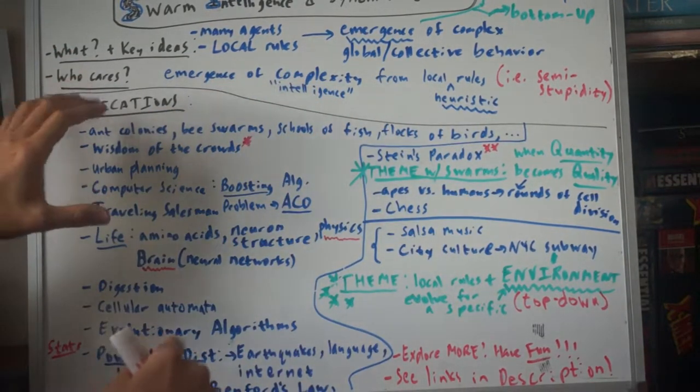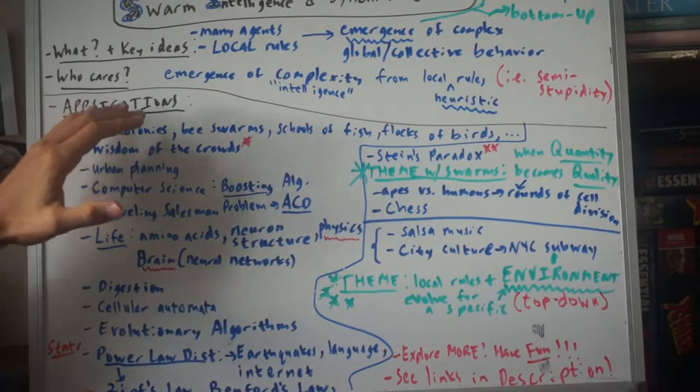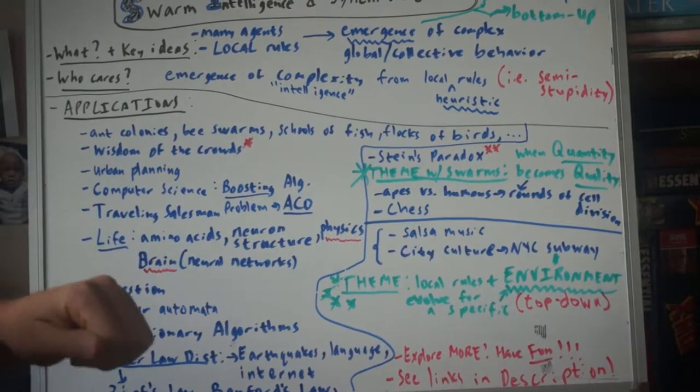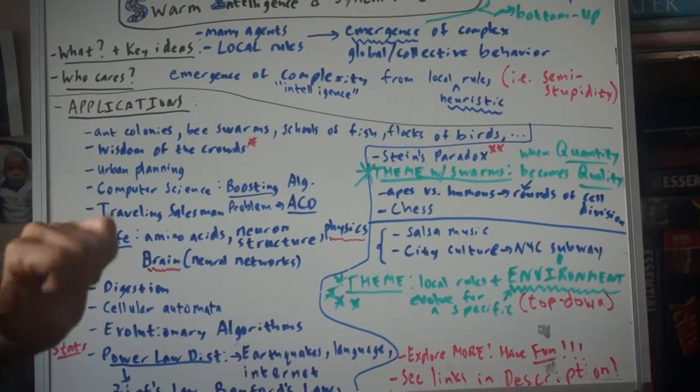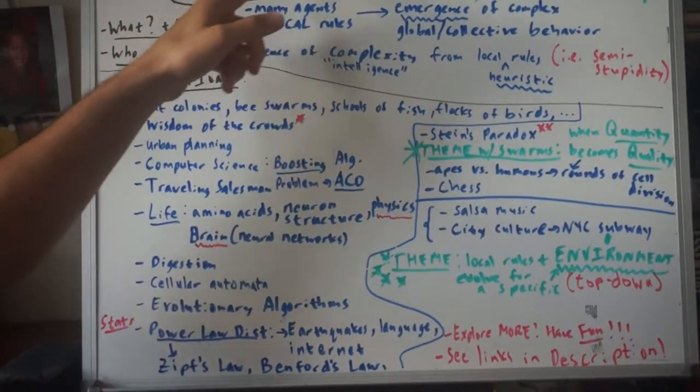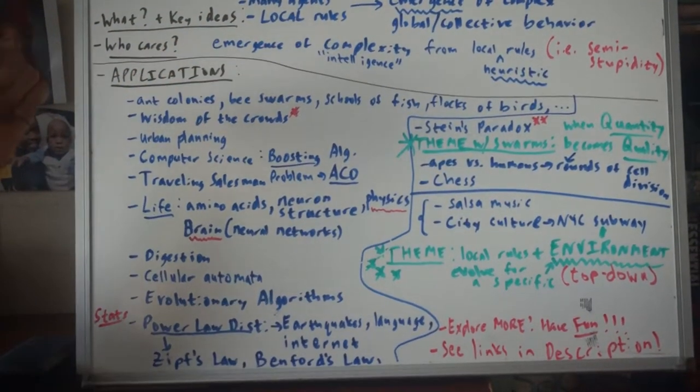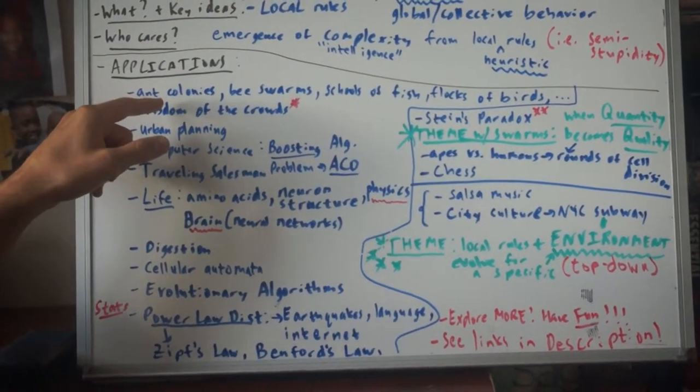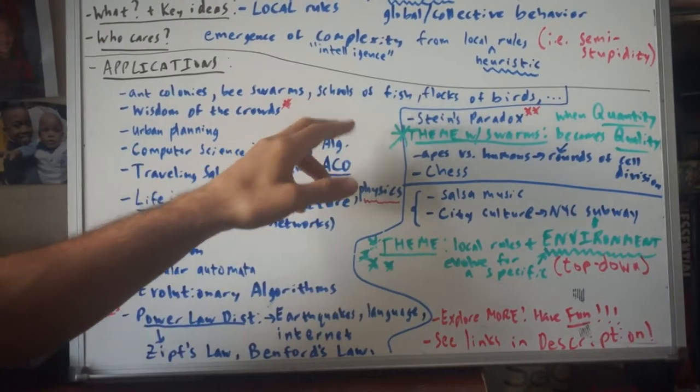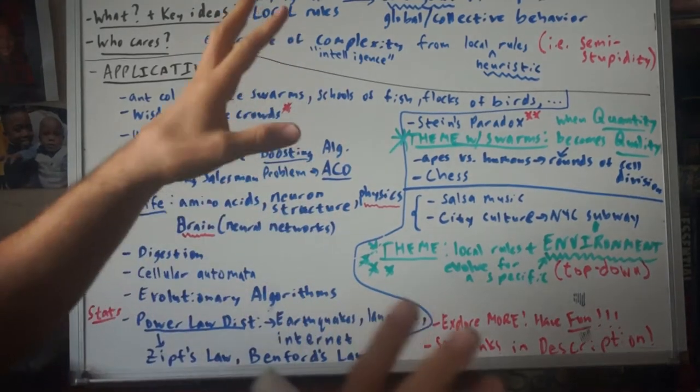All right. So what are the applications? I really want to focus this video on the applications. And also, I'm going to say this at the end, but make sure to check out the links in the description. There'll be a ton of stuff for you to look at. All right. So typically, when you think of swarm intelligence, it has to do a lot with animals. So you have ant colonies, bee swarms, that's the name swarm, schools of fish, flocks of birds, it could be other animals, doesn't matter.